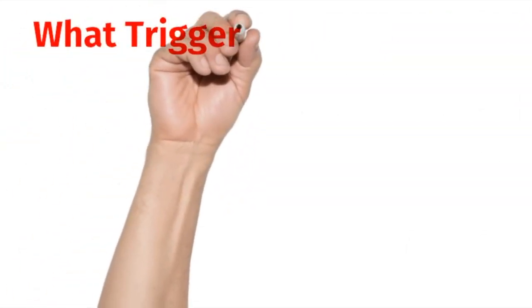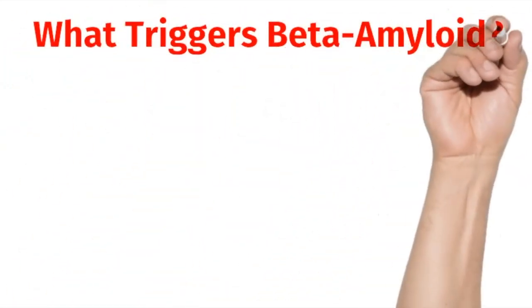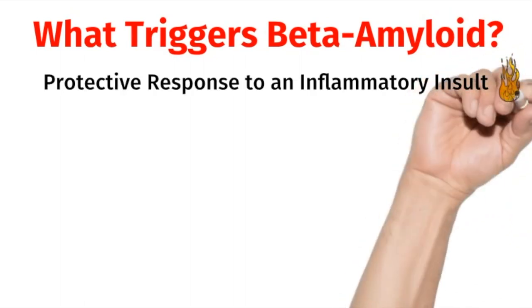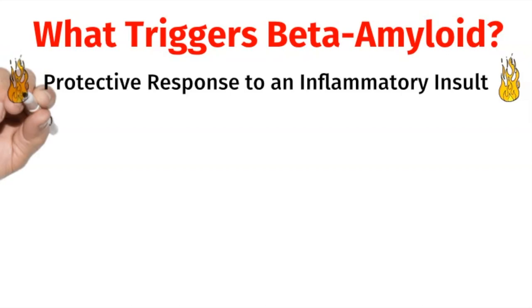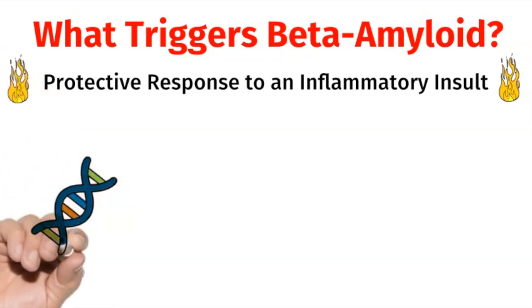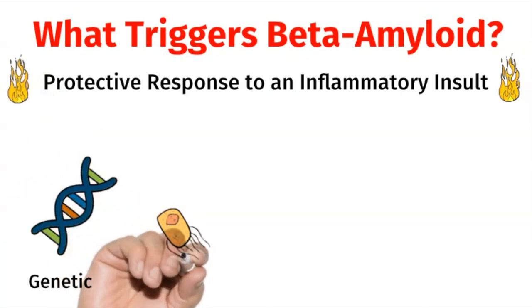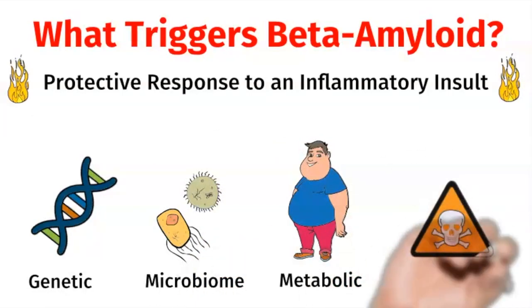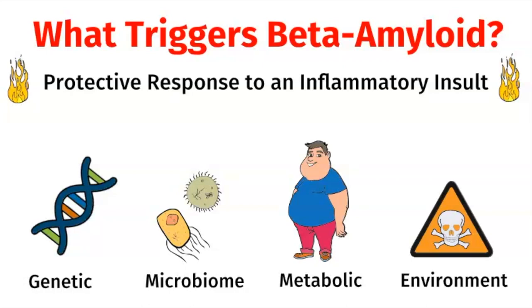This leads us to the question, what triggers the formation of beta-amyloid? It turns out that beta-amyloid is actually the brain's protective response toward an inflammatory insult. This could be caused by genetic factors, inflammation in the microbiome, metabolic inflammation, or exposure to toxins from the environment.